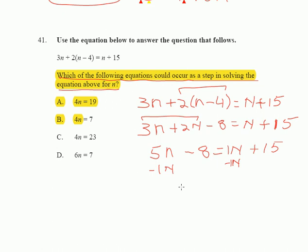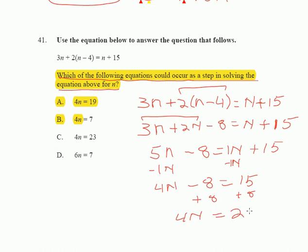We've got 4N minus 8 is equal to 15. Let's continue by adding 8 to both sides, and what we wind up with is 4N is equal to 23. And I've just nailed it — I don't have to solve any further. It's 4N equals 23. The answer is right there. Hope that made sense. Thanks.